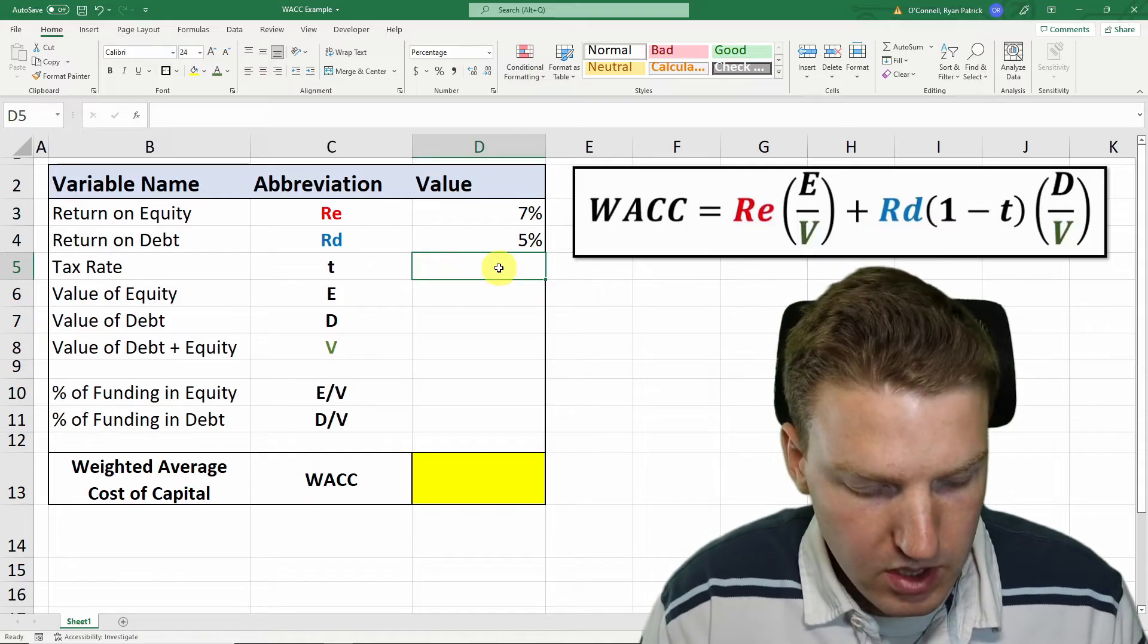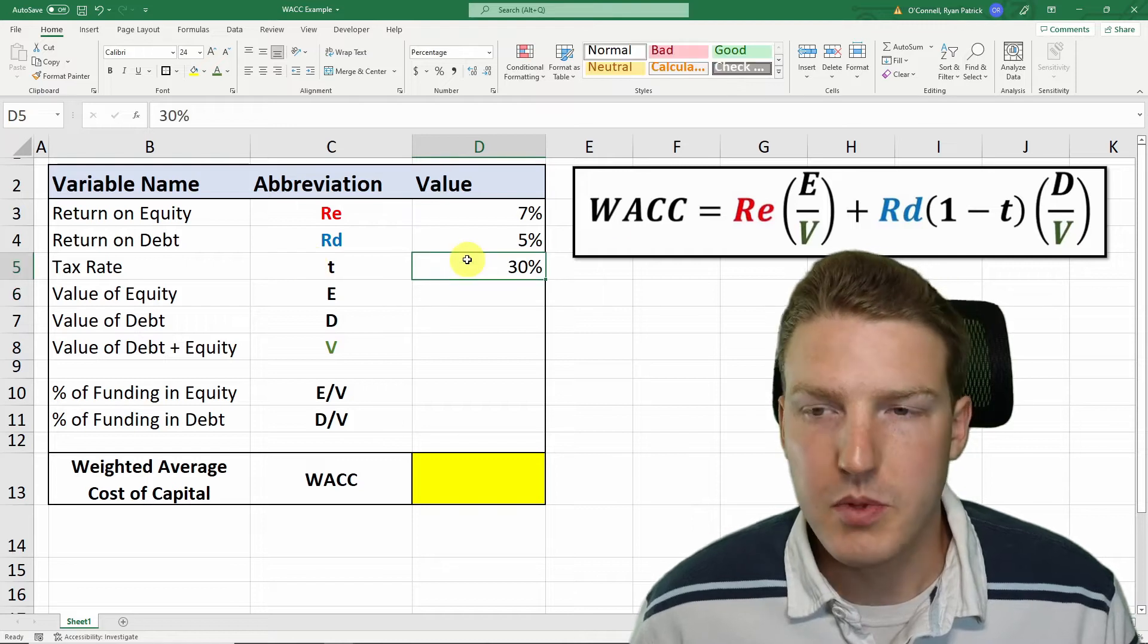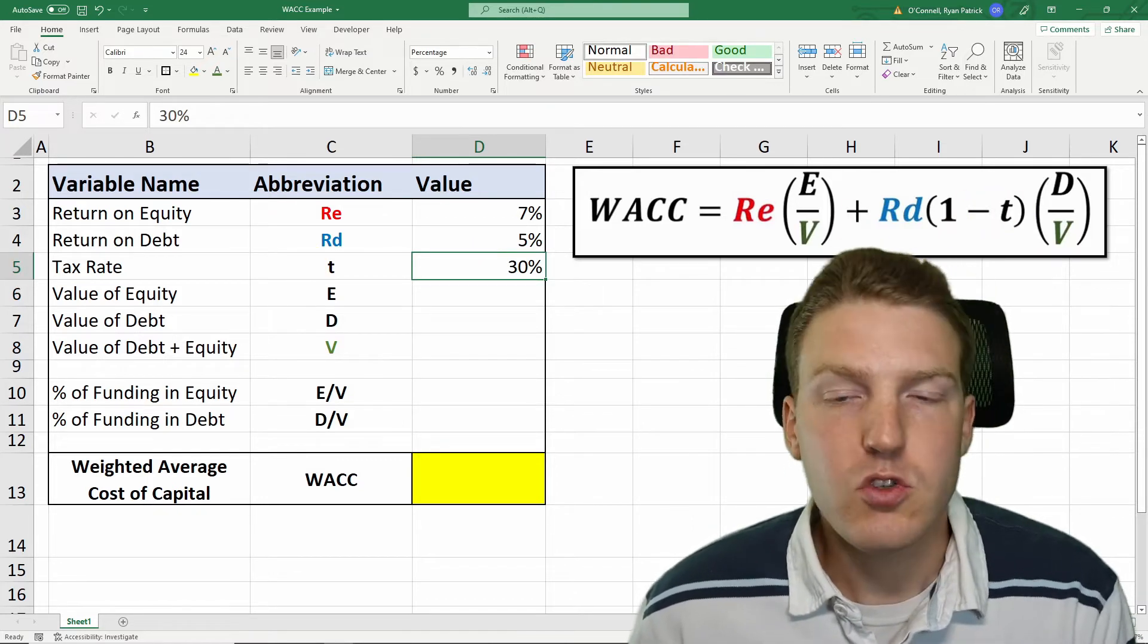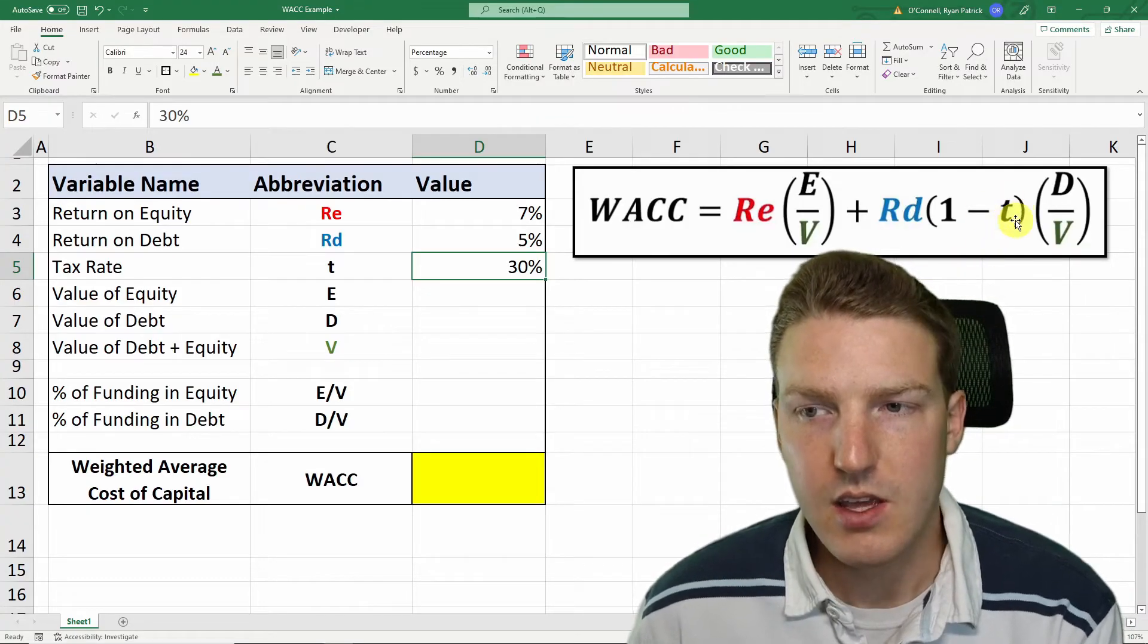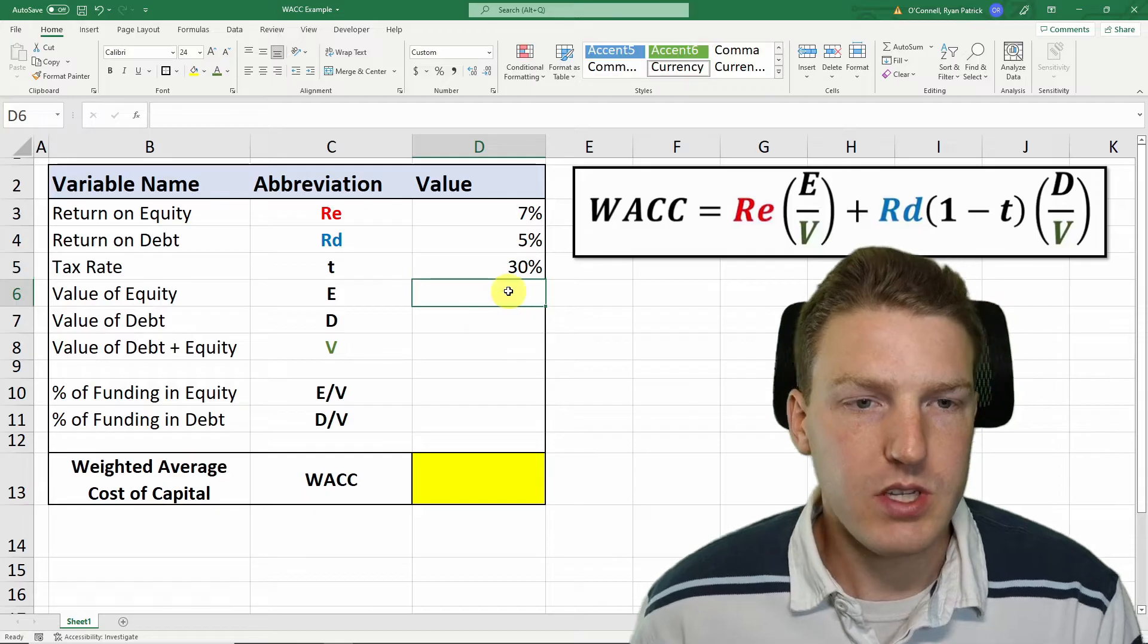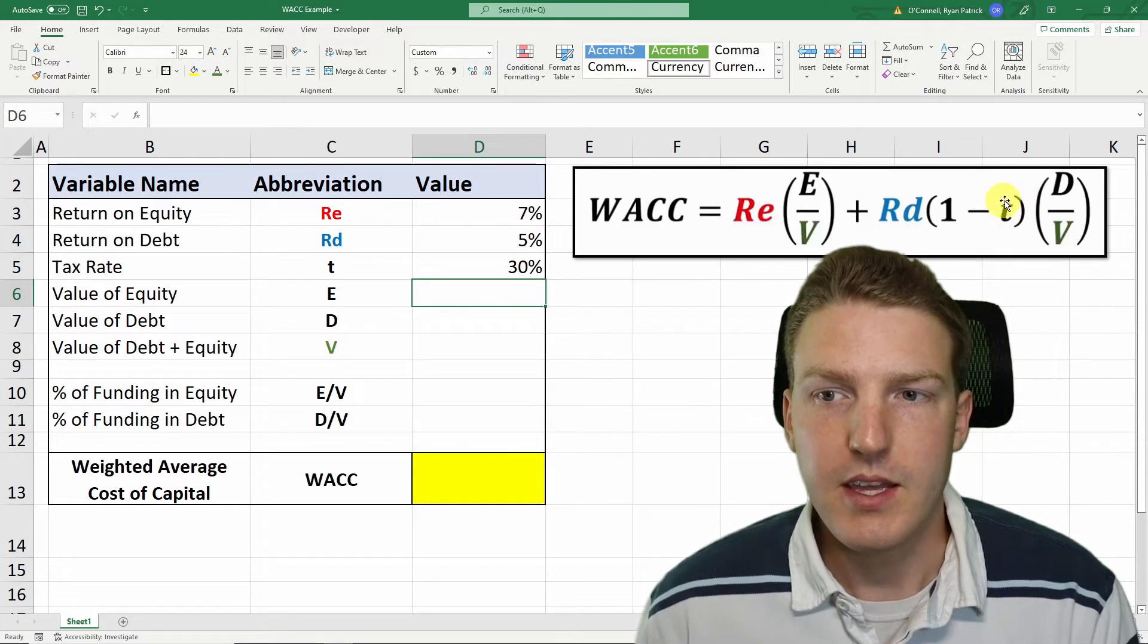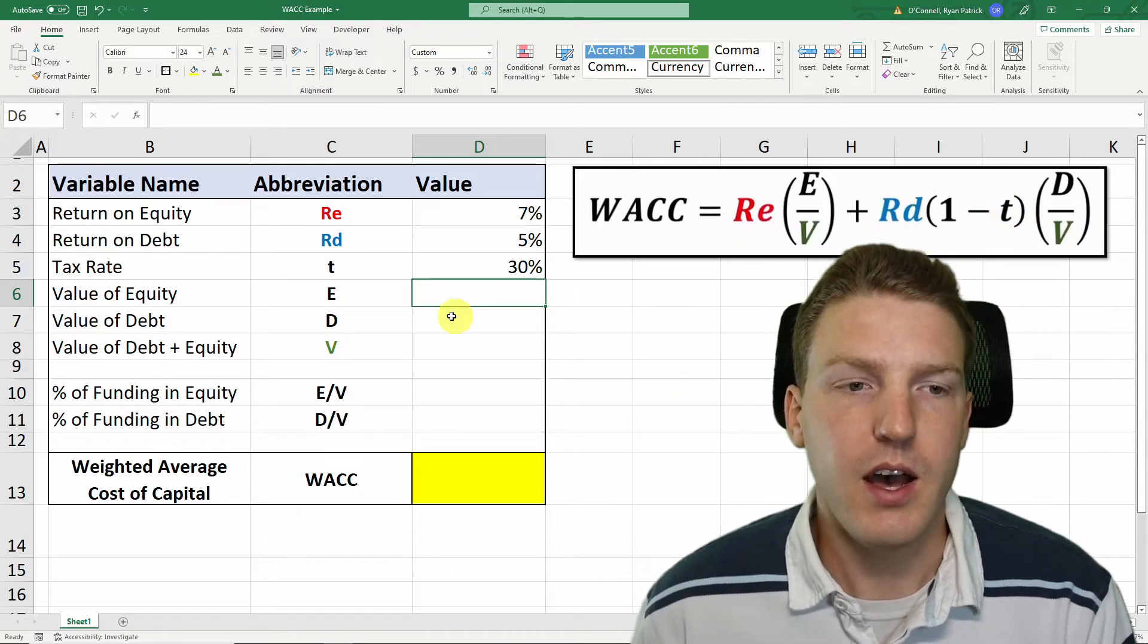Now we need to consider tax rate. Let's go with 30%. The reason tax rate is in this formula is because when you look at an income statement, the interest expense that you pay gets taken out before the taxes that you pay. So your taxes are actually reduced due to the interest expense of the debt, which is why it's a benefit in this formula and lowers our cost of capital.